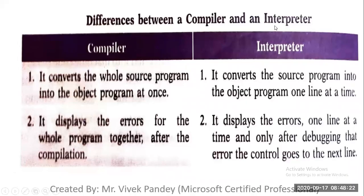Difference between a compiler and an interpreter. A compiler converts the whole source program into object program at once, and displays errors for the whole program together after compilation. An interpreter converts the source program into the object program one line at a time, and displays errors one line at a time — the control goes to the next line only after debugging that error.